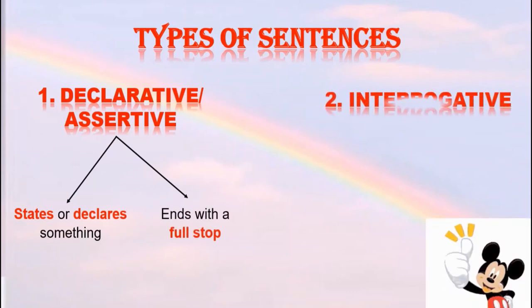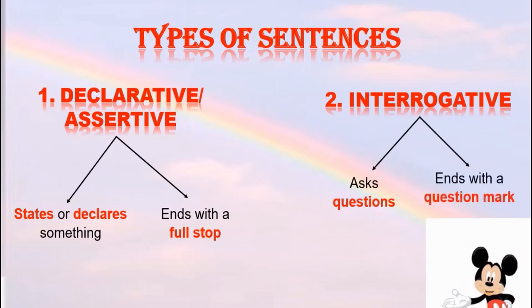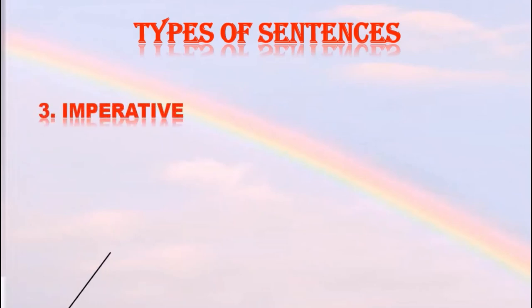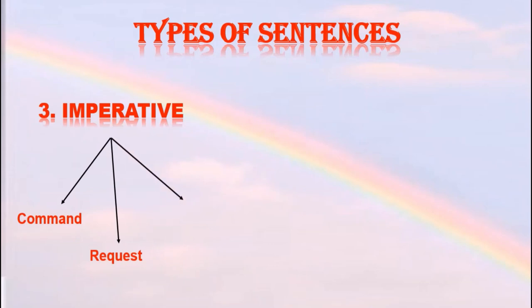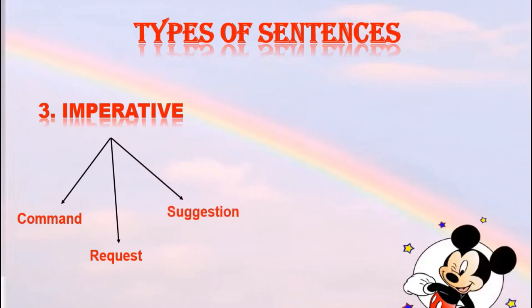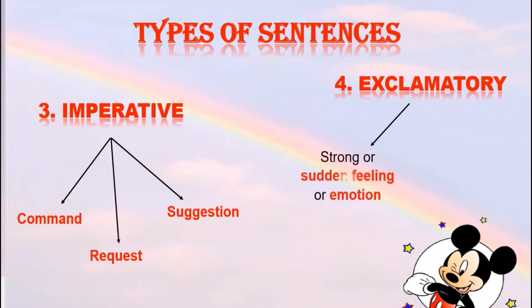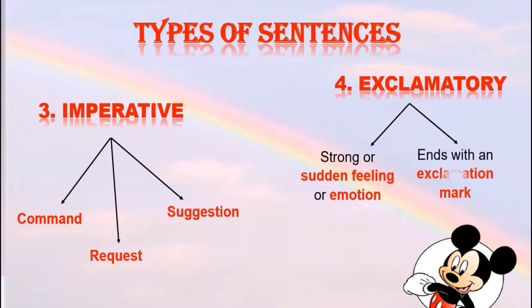Interrogative sentences ask questions and end with a question mark. Imperative sentences are when a command is expressed, a request is made or a suggestion is made, and they end with a full stop.